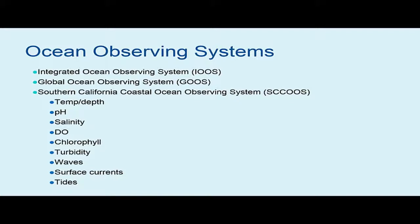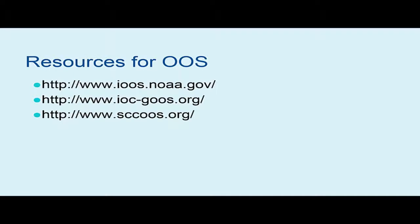Typical data sets collected by these systems include temperature and depth, pH, salinity, dissolved oxygen, chlorophyll, turbidity, waves, surface currents, and tides. Data sets are publicly available to download as a spreadsheet and can be analyzed by time and place. At these websites, you can find interactive maps to visualize the data in many formats for downloading.